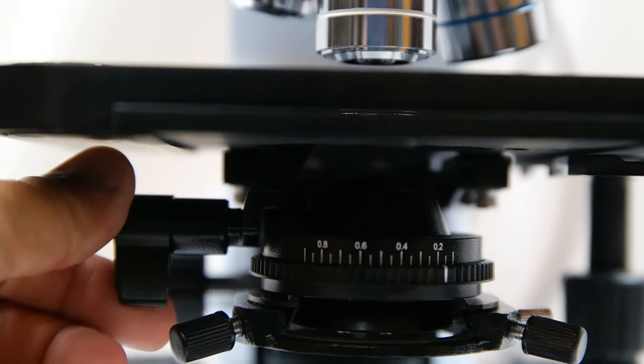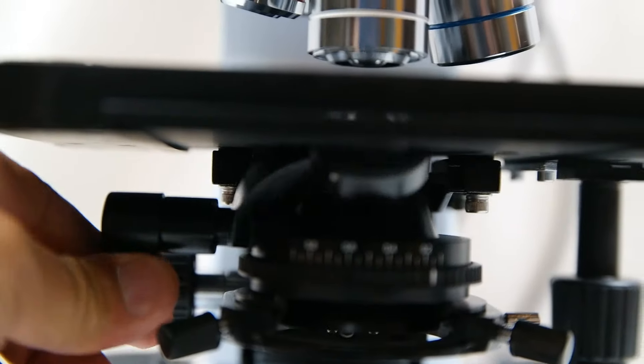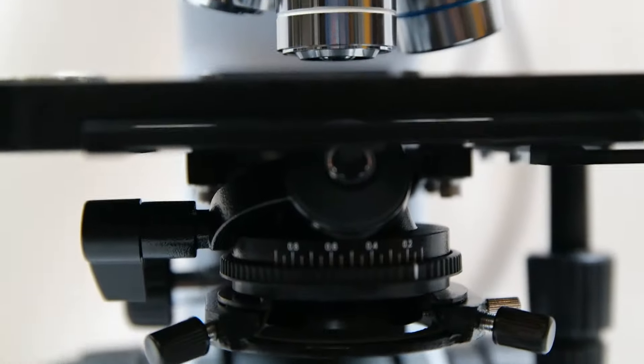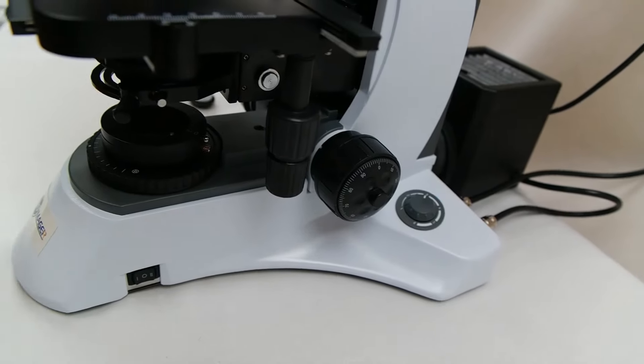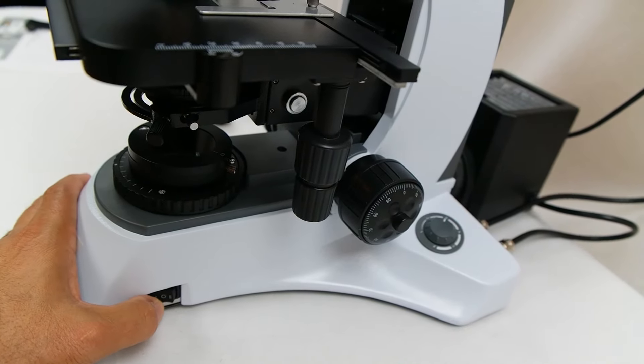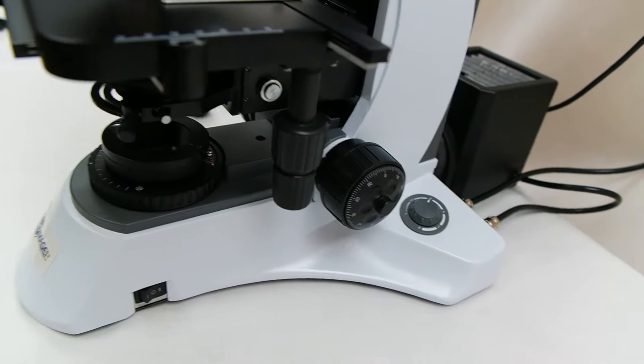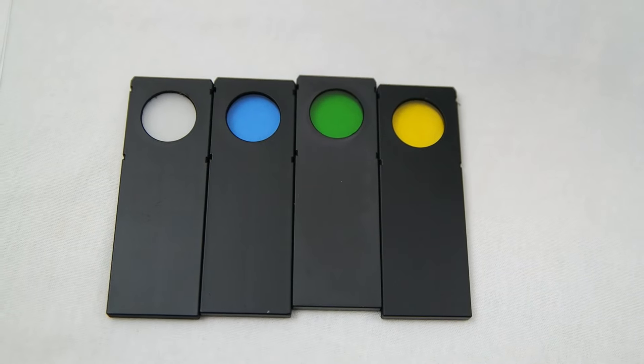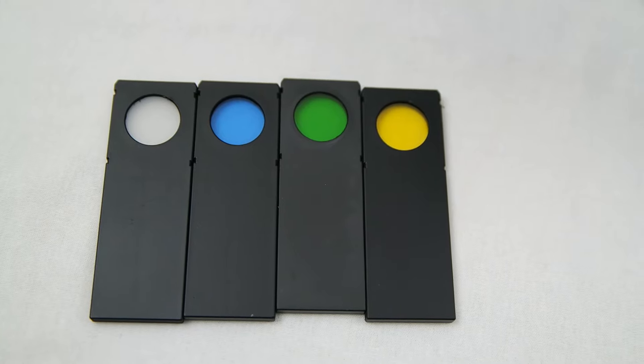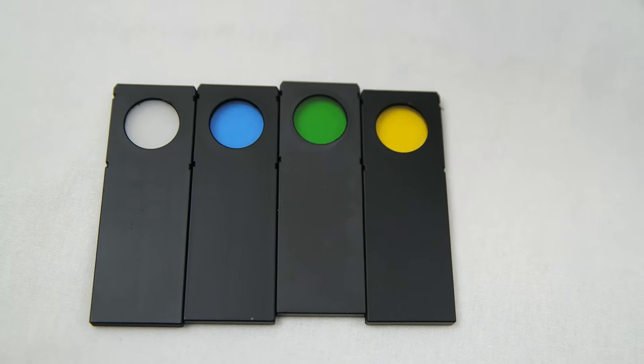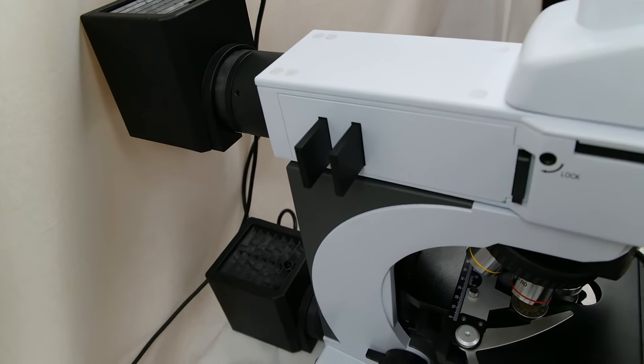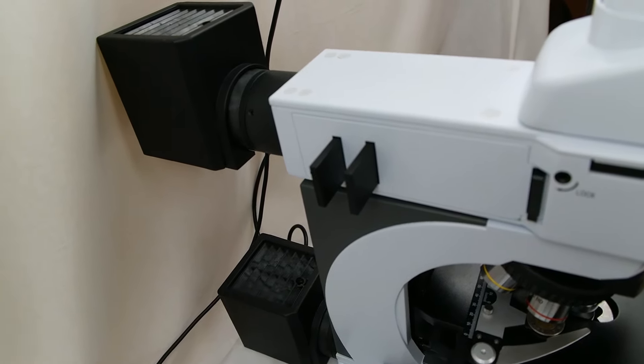This microscope comes with a swing out condenser with a numerical aperture of 0.9. You can turn on each light source separately for the reflected light or transmitted light. With this microscope you get color filters and also neutral density filters of ND6 and ND25. You can use one or two filter for the reflected light.